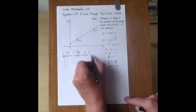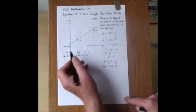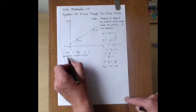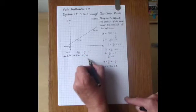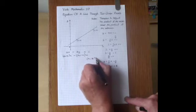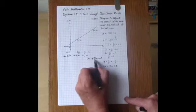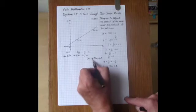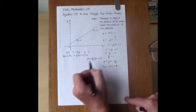So the way we can write this down in general, if we have the coordinates X2, Y2 and X1, Y1, the product of the means means the multiplication of the inner two numbers, X1, Y2 minus.